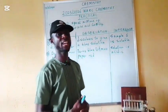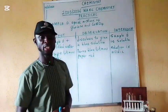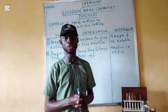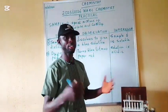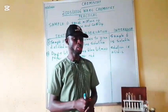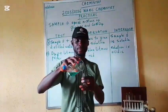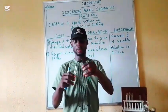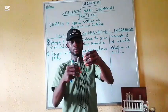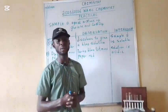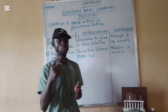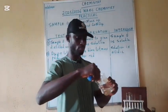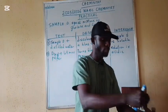Now the next likely question they may ask us is to divide our sample solution into two portions. From our two portions, we can add other reagents to test the sample. So let's divide our sample into two portions. Let's add sodium hydroxide in drops to our first portion and look at the observation.